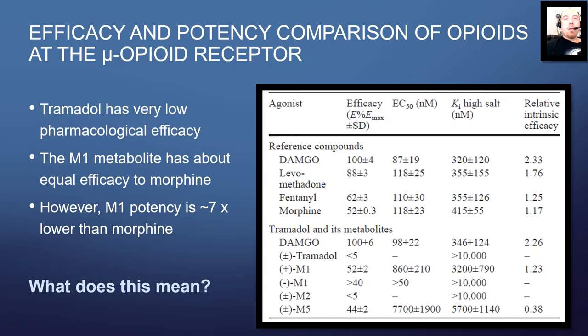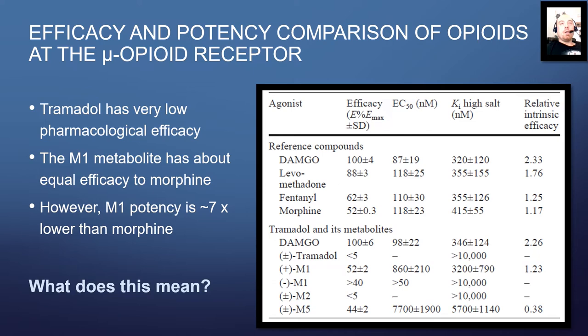The key point is whether these substances can produce the same maximum response — and the answer is yes. If you give enough, you can produce the same maximum response. So by definition, both morphine and M1 are partial agonists relative to DAMGO, with much lower maximum responses than the true full agonist. What I'm getting at is: if morphine is also a partial agonist, but we're not discussing that in clinical or literature contexts, then calling tramadol or its metabolite a partial agonist might mislead someone into thinking the tramadol metabolite does not give you the same effect as morphine. In reality, it might — if you gave enough of a dose.